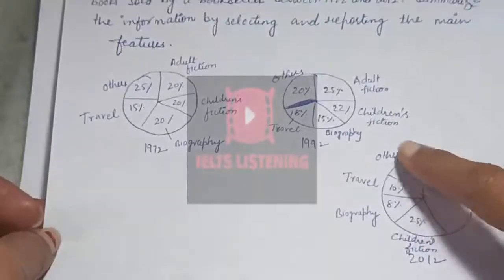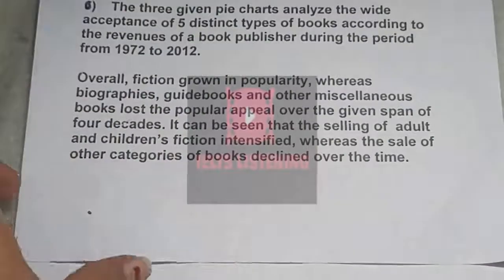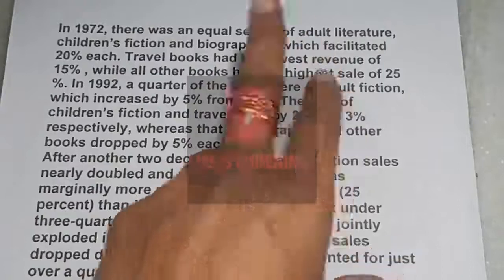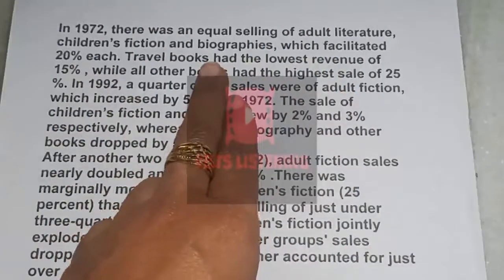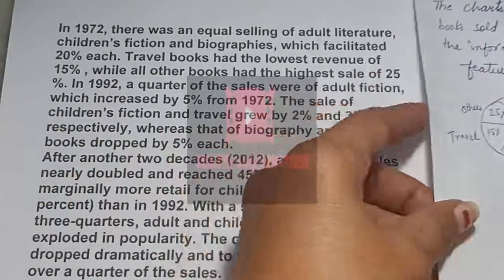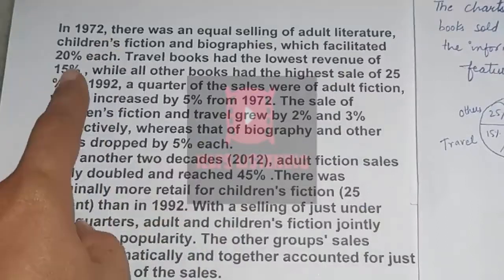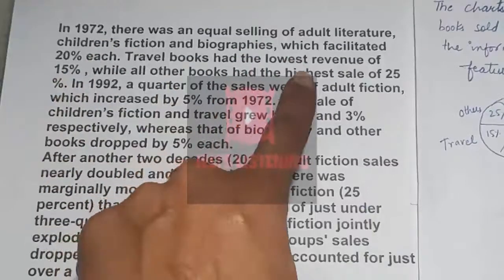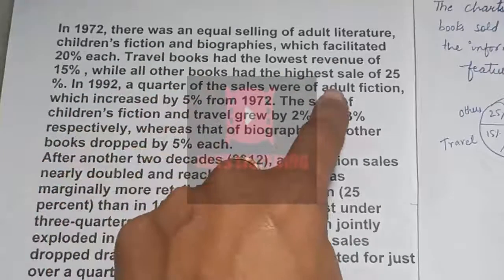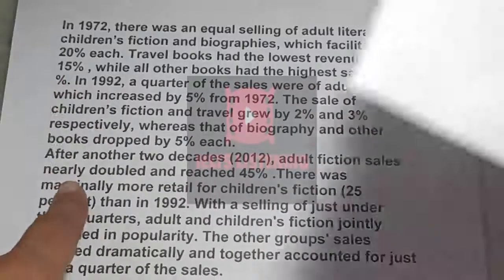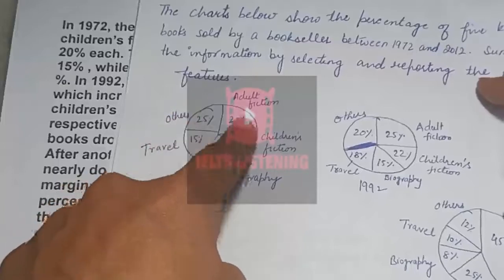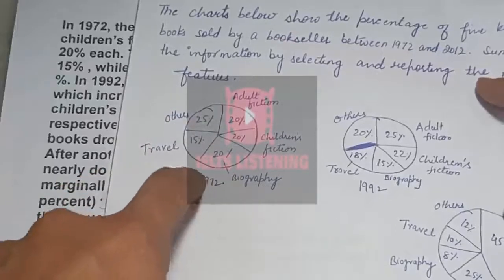In 1972, there was an equal selling of adult literature, children's fiction, and biographies — they were approximately 20% each — which facilitated 20% each. Travel books had the lowest revenue of 15%, while other books had the highest sale of 25%. So in 1972 travel books were at 15% and others were at the highest selling of 25%.